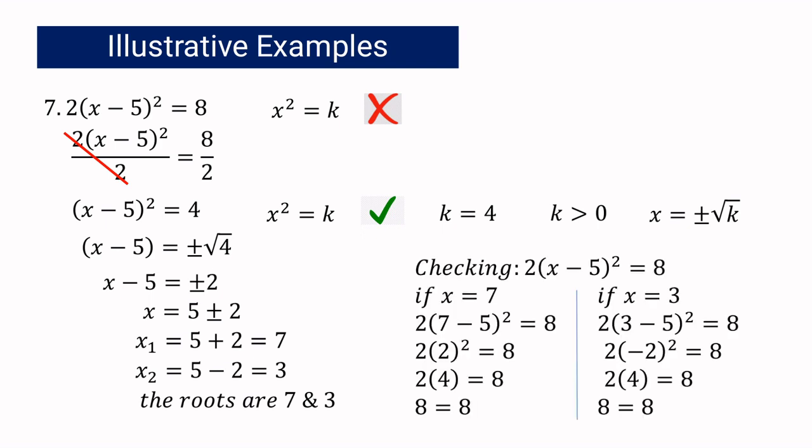Let us check. If x equals 7, then 7 minus 5 is 2, 2 squared is 4, and 4 times 2 is 8, so 8 equals 8. If x equals 3, then 3 minus 5 is negative 2, negative 2 squared is 4, and 2 times 4 is also 8. Both solutions are verified.